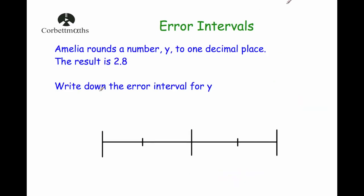Our next example: Amelia rounds a number y to one decimal place. Her answer is 2.8. Write down the error interval for y. She rounds the number and her answer is 2.8, rounding to one decimal place.